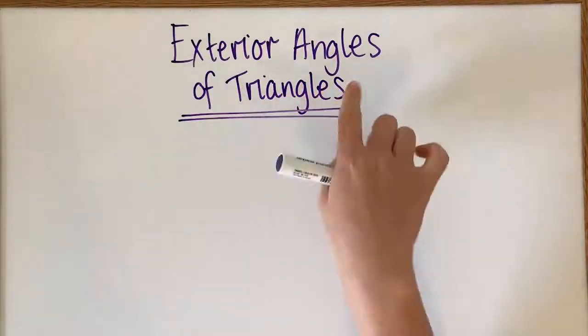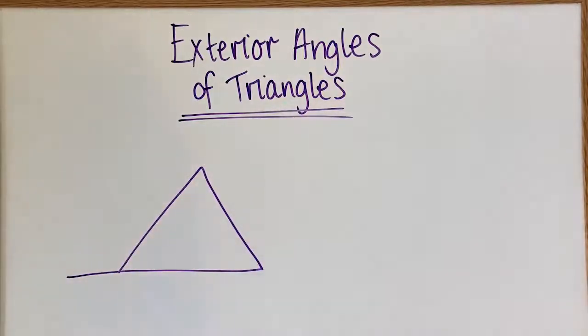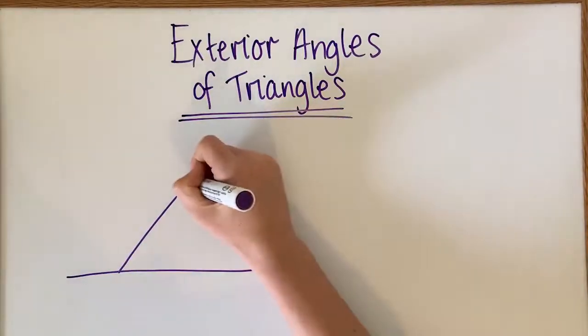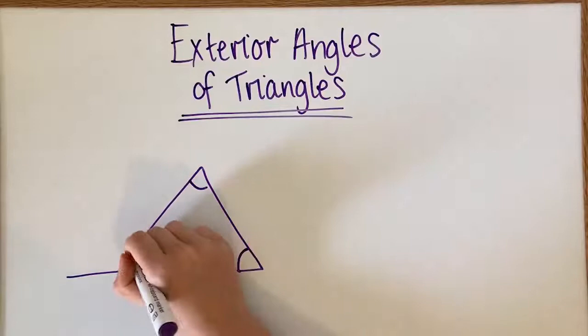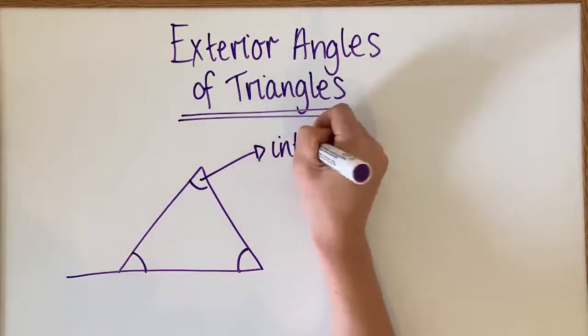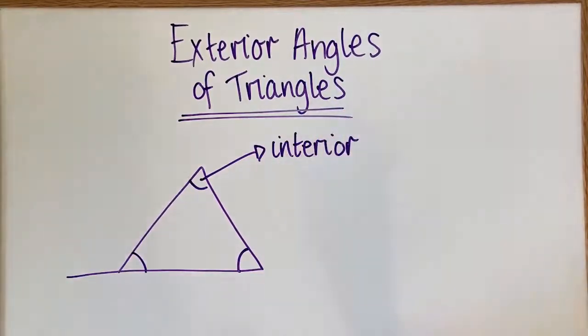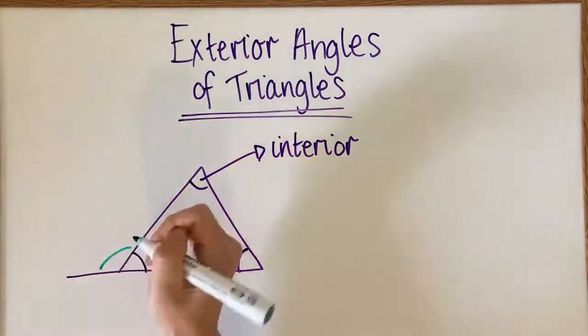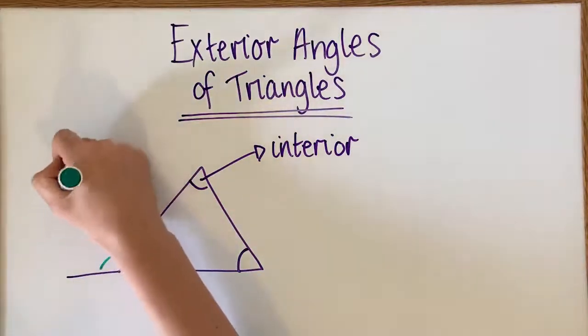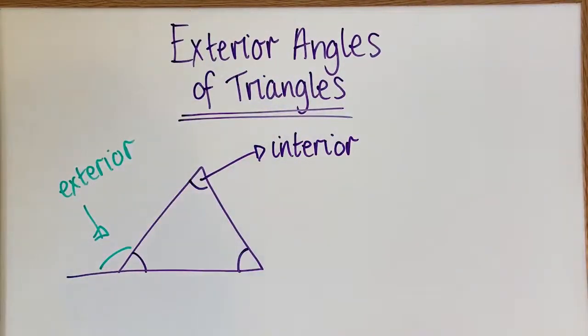What we're going to do today is exterior angles of triangles. If we think of a triangle, these purple angles here are all interior angles, meaning they're inside the shape. This green angle here is what we call an exterior angle because it's on the outside of the shape.